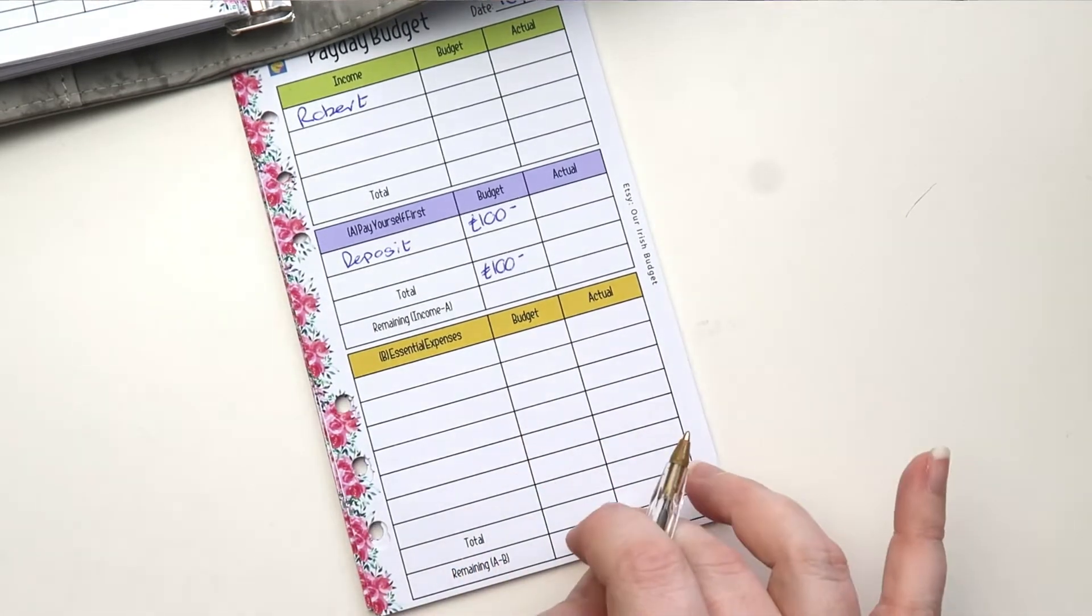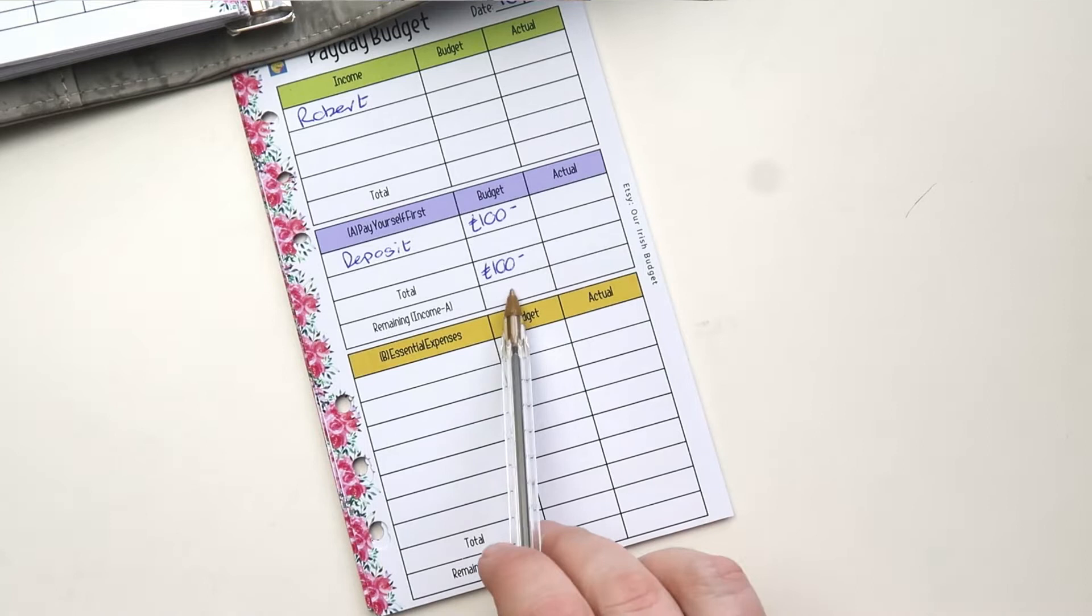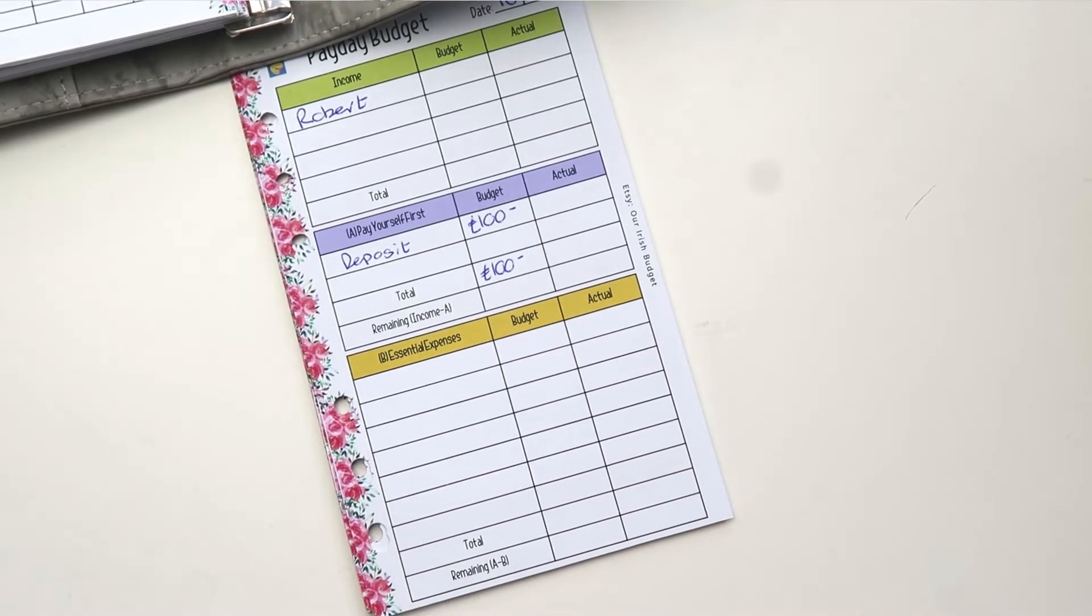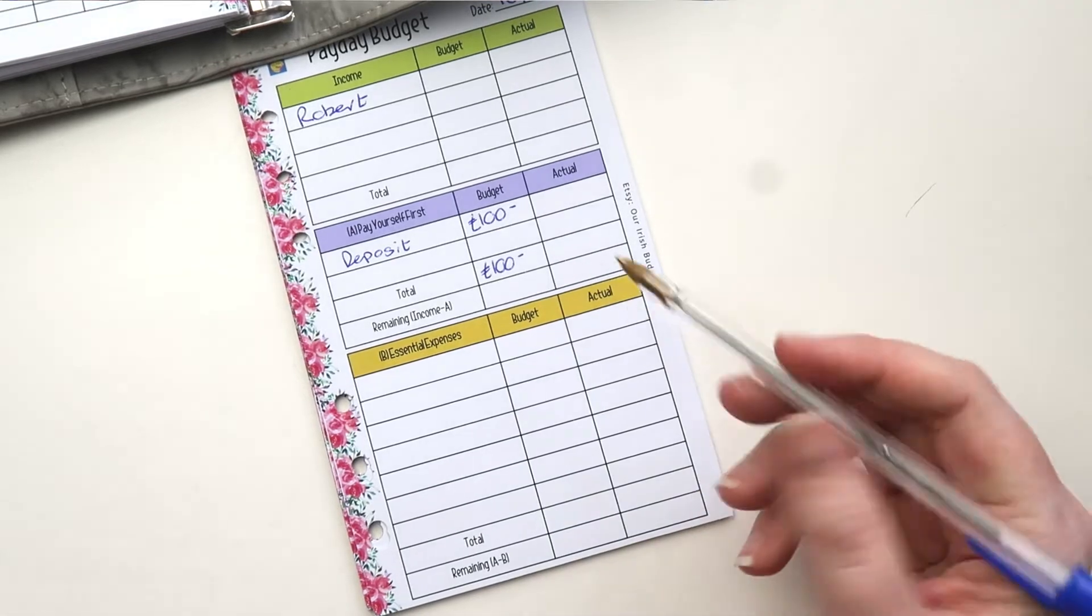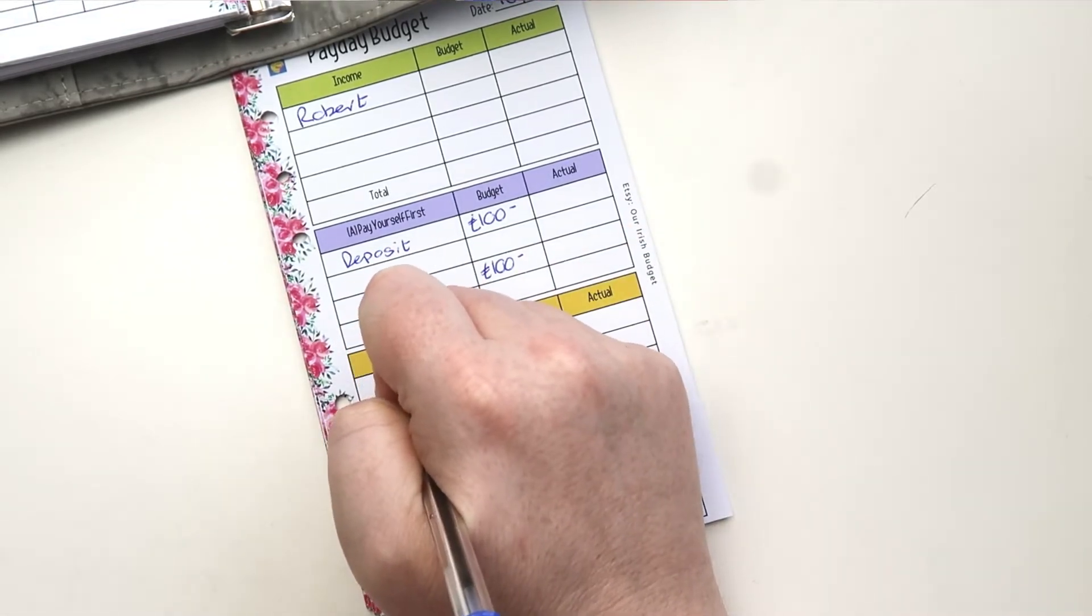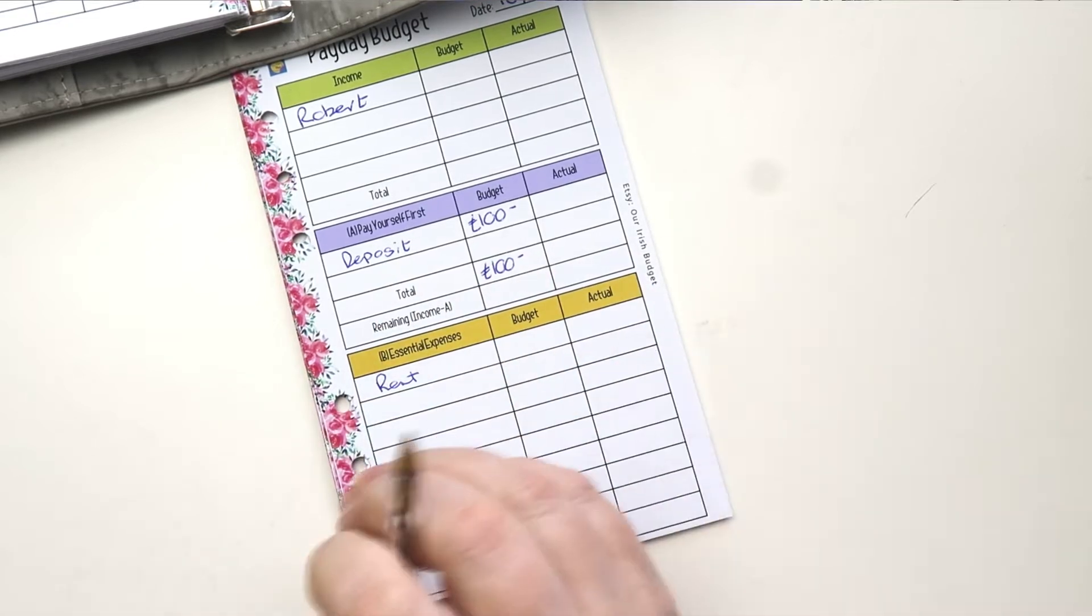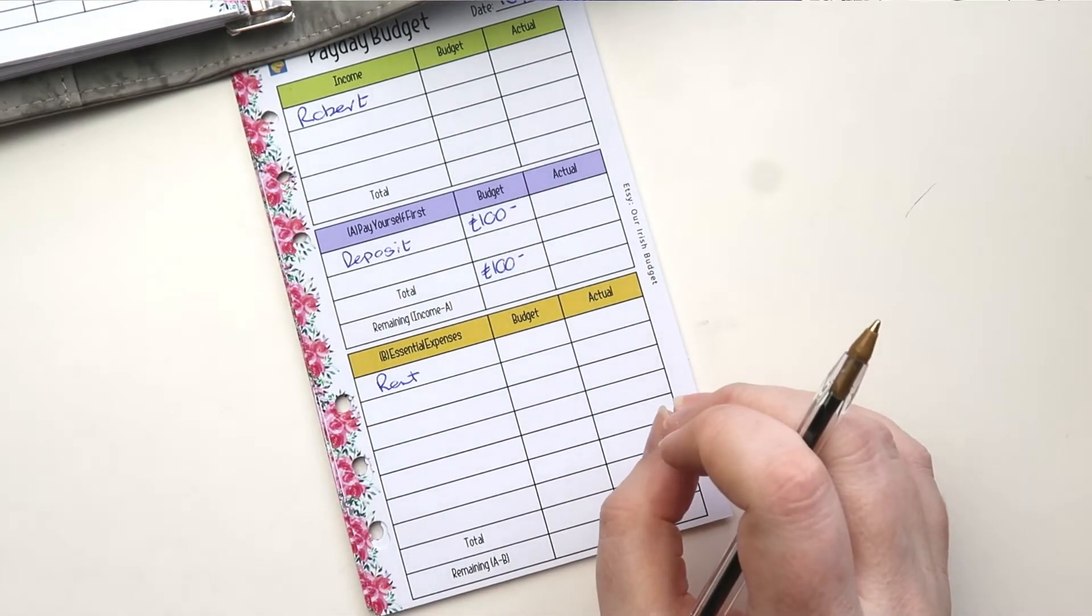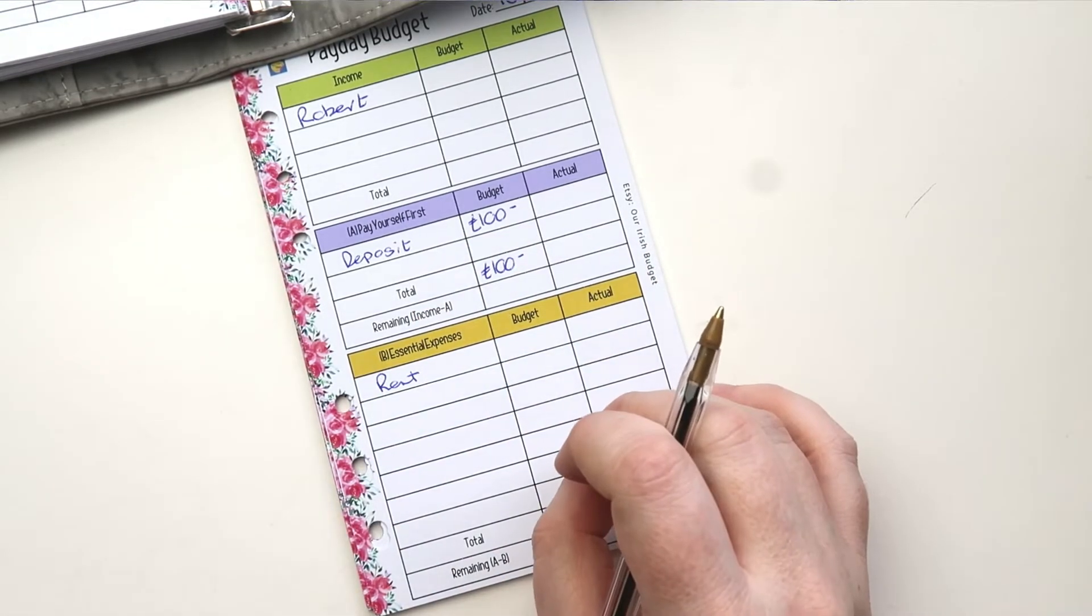Next up we have the essential expenses. Once you find out what is remaining after you take out your pay yourself first, you can move on to the rest of your budget. For essential expenses, it's stuff like rent, your heating, your electricity, clothing, medical, that sort of stuff, food, that will keep you warm, safe and healthy. And they are the basics of your budget.